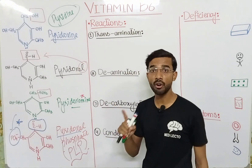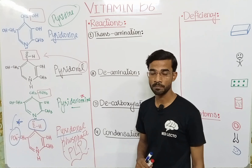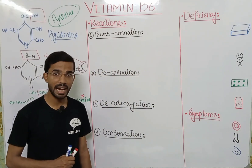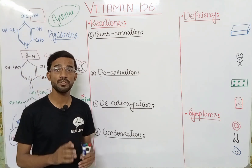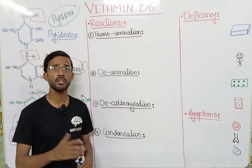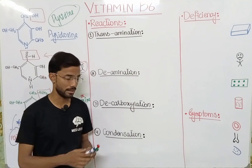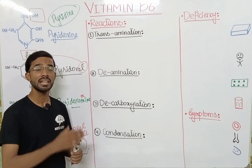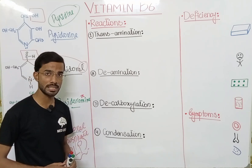Pyridoxal phosphate acts as a coenzyme in different reactions. It is involved in reactions involving amino acids specifically, and also in the synthesis of dopamine and serotonin. The first reaction is transamination. As the name indicates, the transfer of an amino group from one compound to another compound is called transamination.